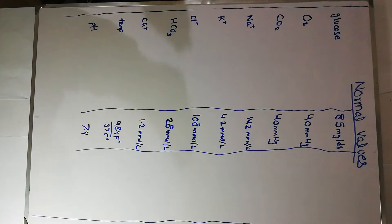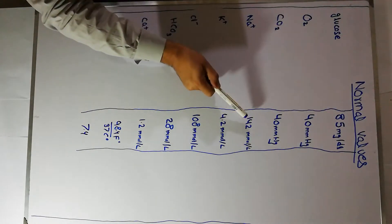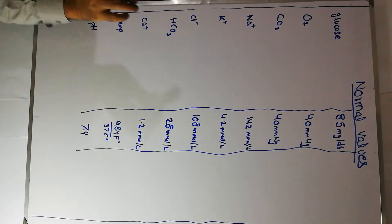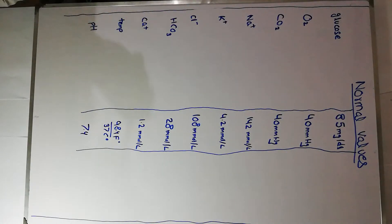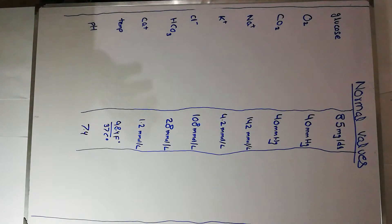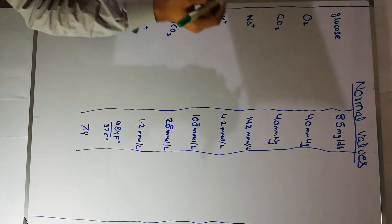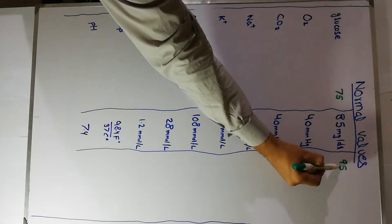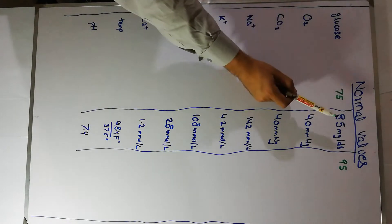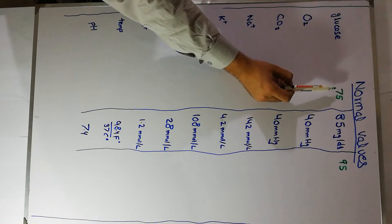When you check the value of glucose, oxygen, carbon dioxide, or any other electrolyte, it will not be exactly 85, 40, 142, 4.2, or 98.4, but will be somewhat above or below these values. Most of the time it will be around these values in a normal human being with no complications or chronic or acute diseases. The range of glucose is about 75 to 95 milligrams per deciliter.